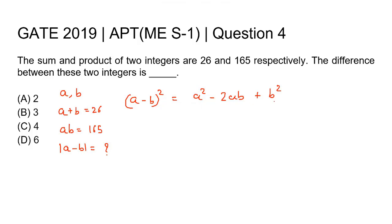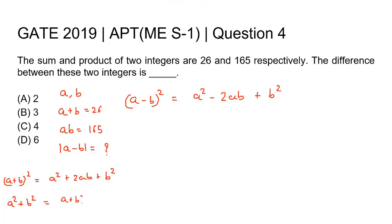To find the value of a² + b², we use the first expansion identity: (a + b)² = a² + 2ab + b². We know the value of (a + b), so we know (a + b)². We also know 2ab. Rearranging, we get: a² + b² = (a + b)² - 2ab.